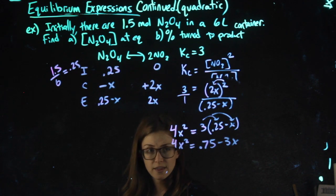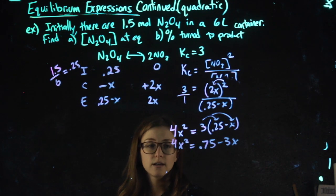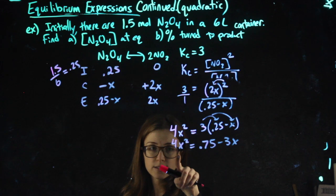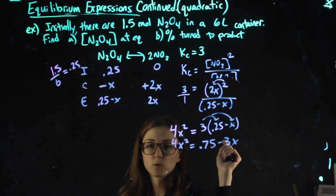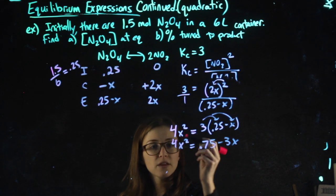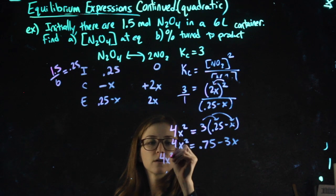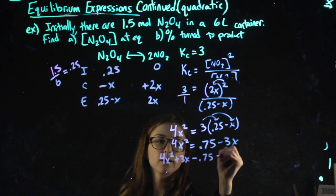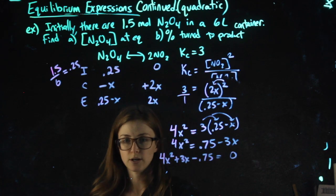Now I'm going to gather everything onto one side of the equals sign. Personally I like moving everything where the x squared is, but ultimately I want this equal to 0. So I'm going to add the 3x over and subtract the 0.75 over, and now it equals 0.